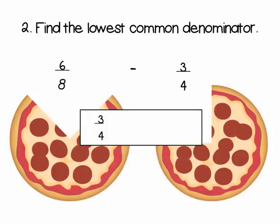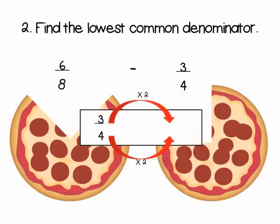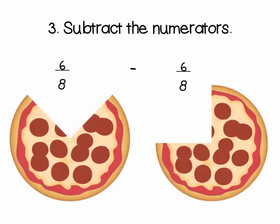So, if we take 3 fourths and multiply both the numerator and the denominator by 2, we end up with 6 eighths. We now have fractions with like denominators and can continue with subtracting. The next step is to subtract the numerators. 6 minus 6 is 0. We don't need to do anything with the denominators, so we end up with 0 eighths.